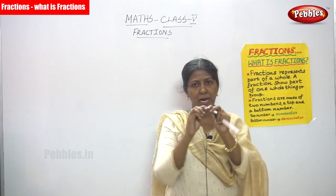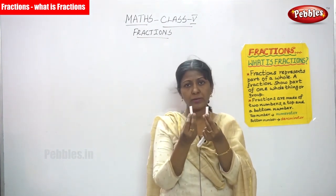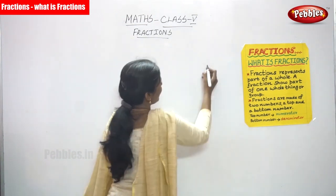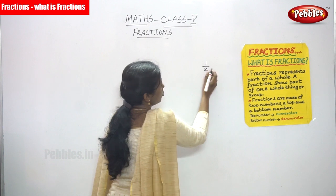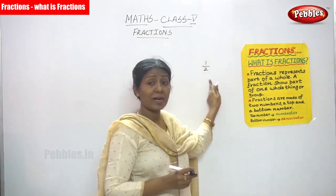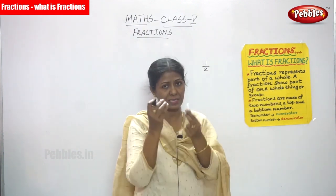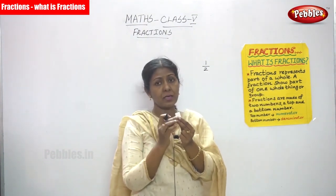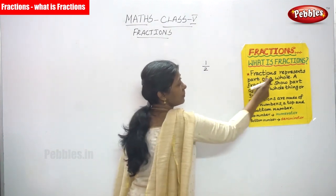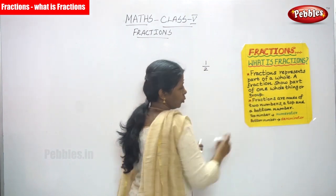Now I cut it into equal halves. What are you going to say? How do you call this? You can call it as half a chocpist. So, half means 1 by 2. This is called a fraction. Fraction represents a part of a whole. There are two pieces but we have taken only one piece — so, 1 by 2. A fraction shows part of one whole thing or a group.